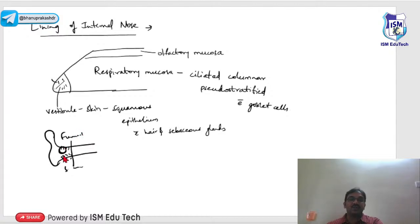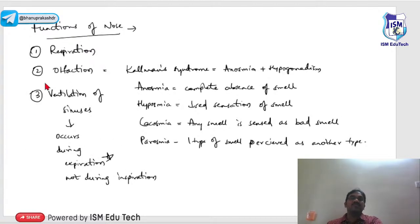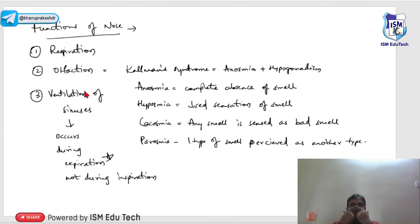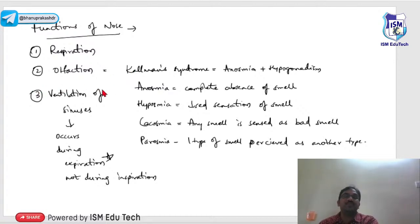In the external auditory canal: a single swelling in the cartilaginous part is furunculosis, a single swelling in the bony part is osteoma, and multiple small swellings in the bony part are exostosis. Functions of the nose include respiration, olfaction, and ventilation of sinuses. During expiration, expired air enters and ventilates the sinuses — not during inspiration.